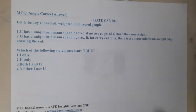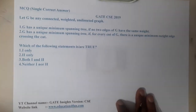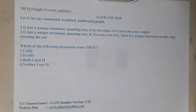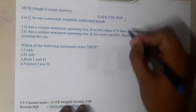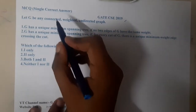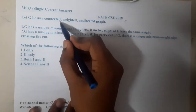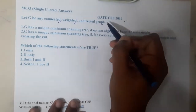Hello guys, we are back with our next lecture. In this lecture let us go through the next question. This question belongs to GATE CSC 2019. The question is: let G be any connected weighted undirected graph.